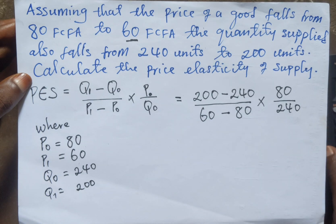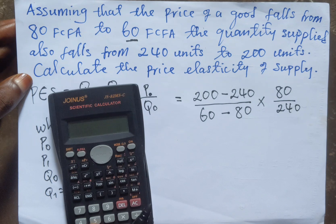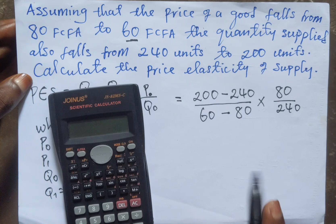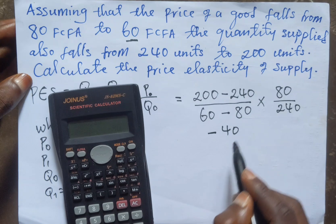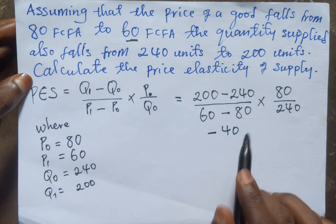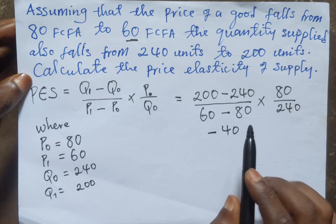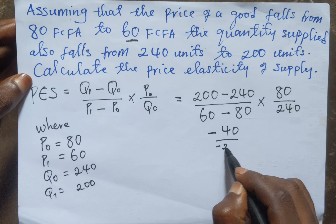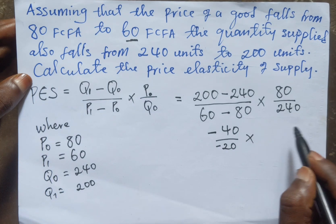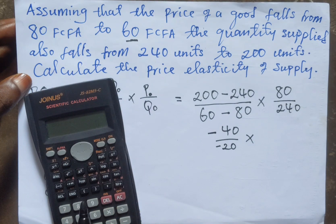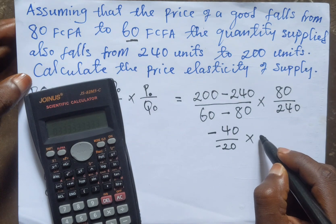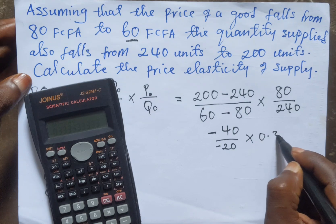So when we subtract, using the calculator, 200 minus 240 we are going to have minus 40. And when we subtract 80 from 60 we are going to have minus 20.